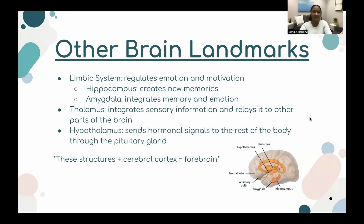Let's talk about the other brain landmarks. We have the limbic system, which regulates emotion and motivation. It includes the hippocampus and the amygdala. The hippocampus creates new memories, and the amygdala integrates memories and emotions. The thalamus is responsible for integrating sensory information and relaying it to other parts of the brain. The hypothalamus sends hormonal signals to the rest of the body through the pituitary gland.